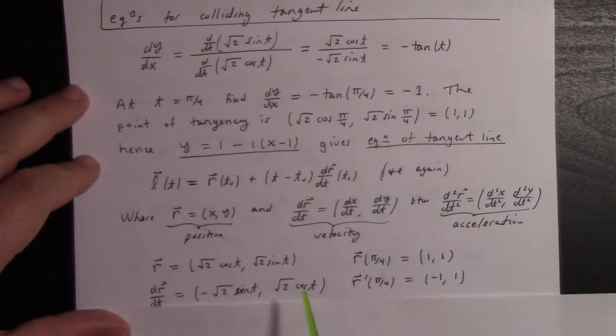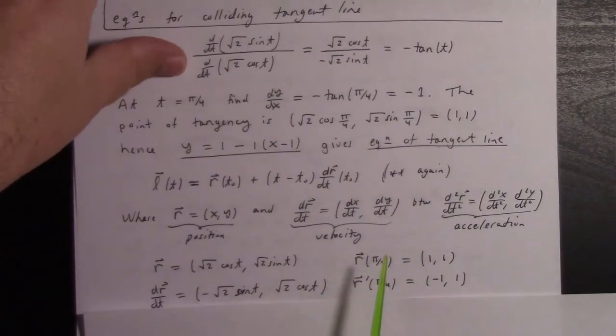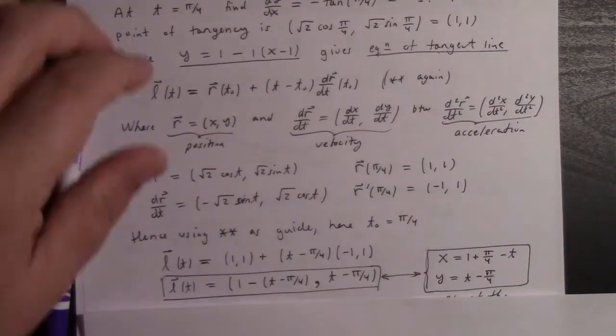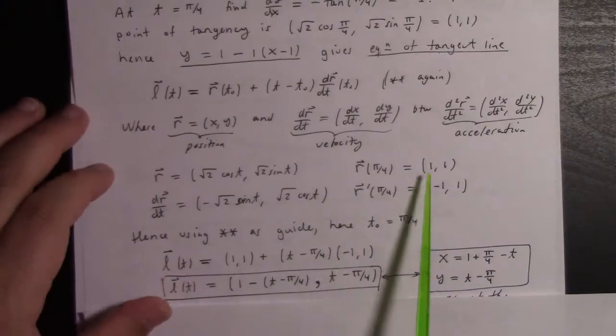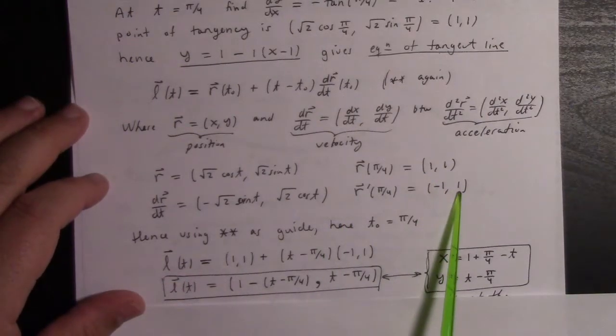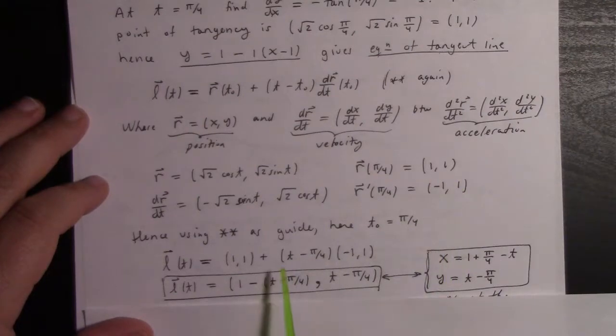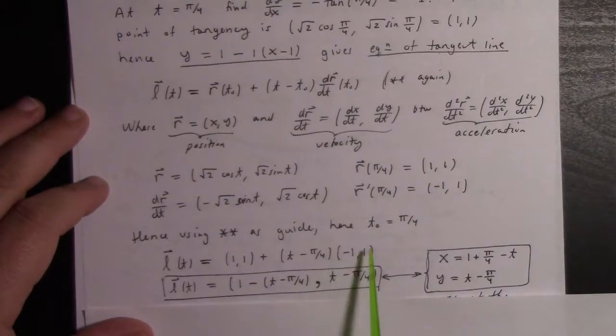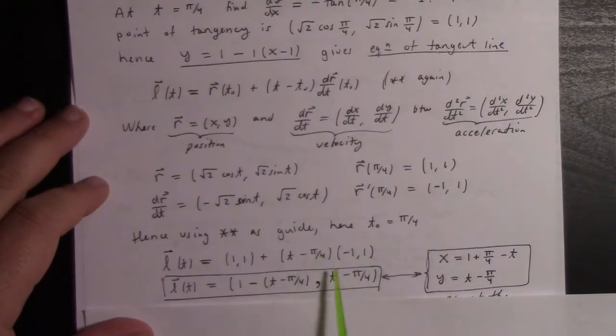Getting back on track here. At time π/4, we have position (1,1) and velocity (-1,1). So the colliding tangent line is given by the position plus (t - t₀) times the velocity at t₀, which is just this.